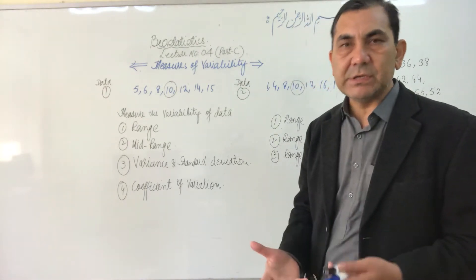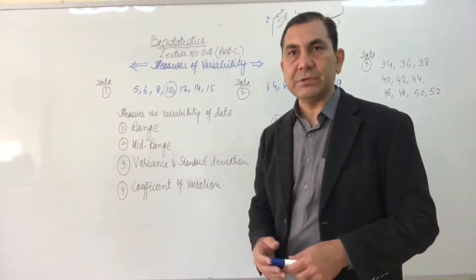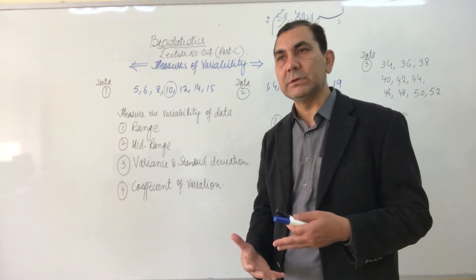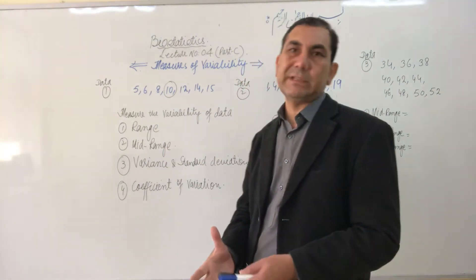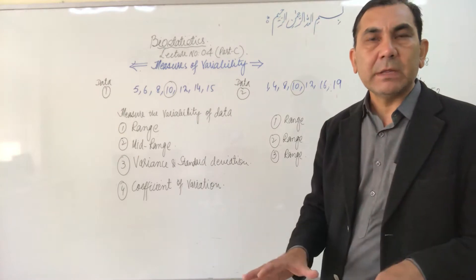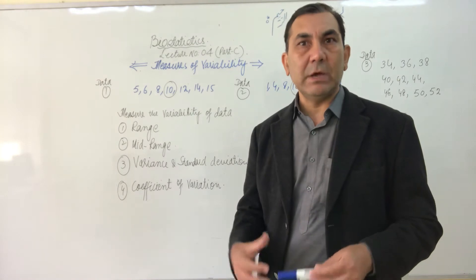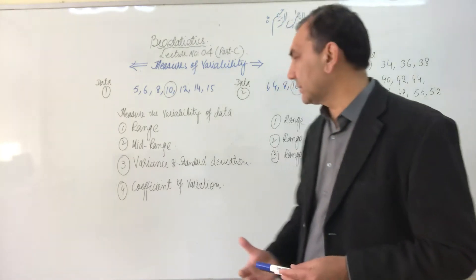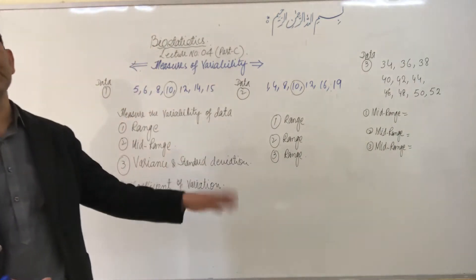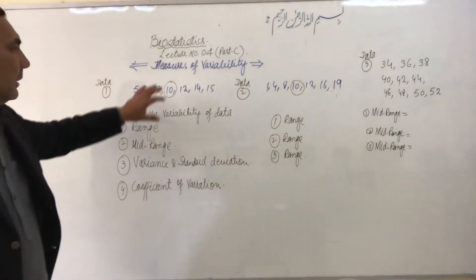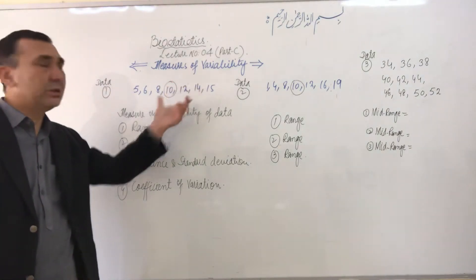The first method, which is the easiest way to measure variability, is called the range. The second method is the mid-range. The third method measures variability by the variance and standard deviation. And the fourth method is called the coefficient of variation.